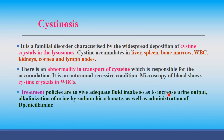Cystinosis is a familial disorder due to deposition of cysteine crystals in the lysosome. Cysteine accumulates in the liver, spleen, bone marrow, WBC, kidney, cornea, and lymph nodes. It is due to an abnormality in transport of cysteine, which is responsible for accumulation. It is also an autosomal recessive condition. On microscopy it shows cysteine crystals in WBC.